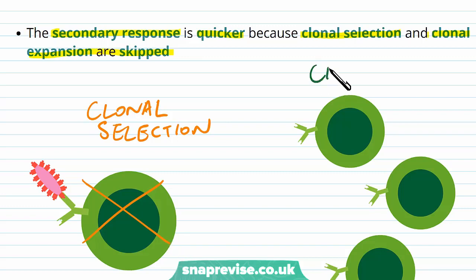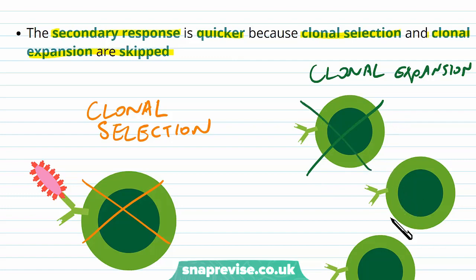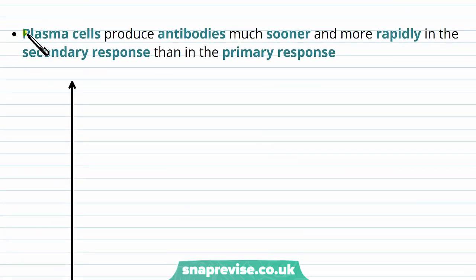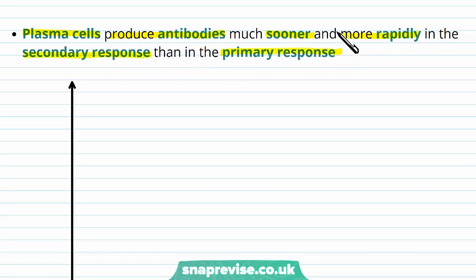With clonal expansion, where we had to make many of those B lymphocytes, that's no longer needed. All we need are the memory cells to form the plasma cells. The plasma cells then produce lots of antibodies much sooner and much more rapidly in the secondary response compared to the primary response.